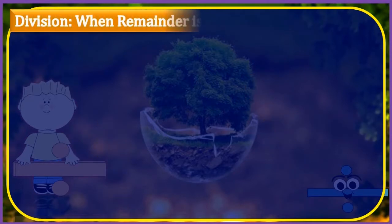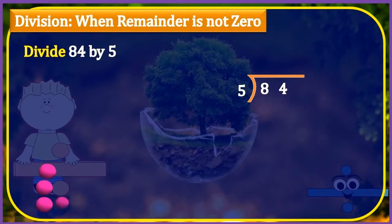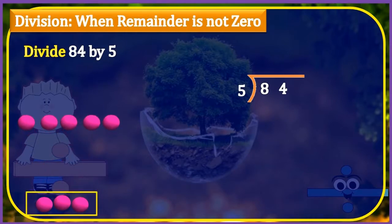Let us learn the division when remainder is not 0. Let us learn it by dividing 84 by 5. First, arrange the numbers like this. Now start dividing with the leftmost digit of the dividend, which is 8. Now suppose we have 8 beads and we have to divide them equally into 5 groups. We see we are left with 3 beads and these cannot be grouped as 5. This means, on dividing 8 by 5, we get 1 as quotient and 3 as remainder.